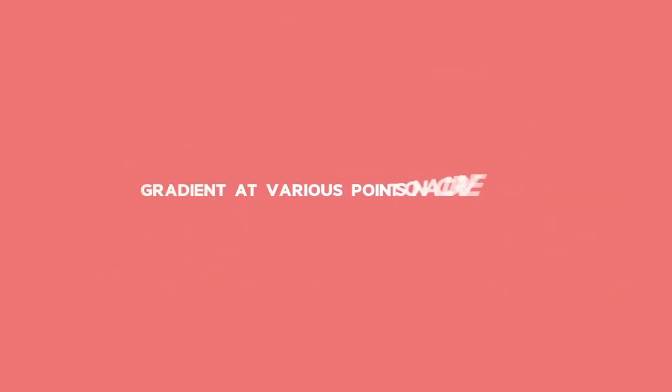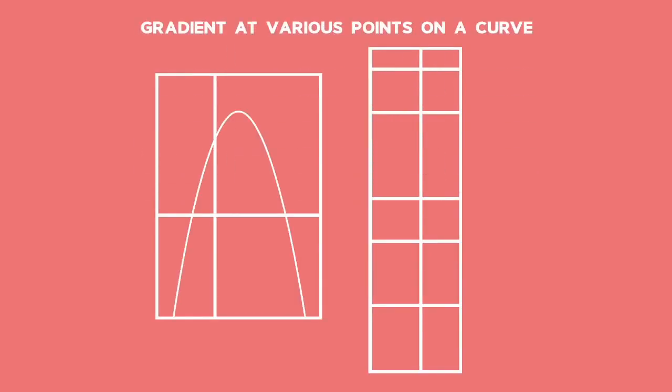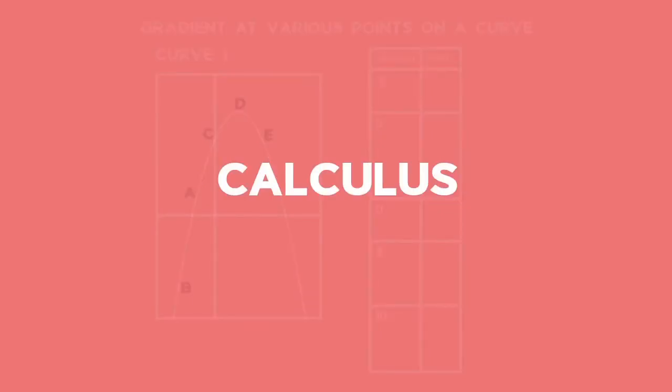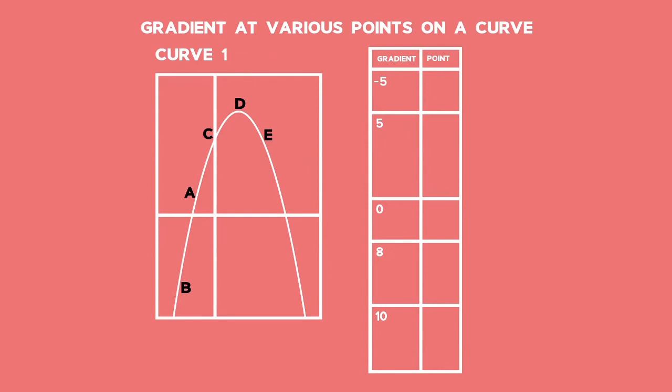Gradient at various points on the curve. From the previous example, we saw that to calculate the average gradient, we needed two points. To find the gradient at a specific point on a curve, we need calculus. By considering the steepness of curve 1, match the points labeled A, B, C, D, and E with the gradients in the table.